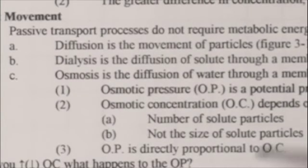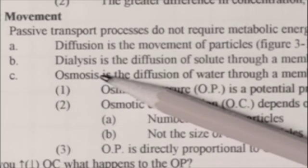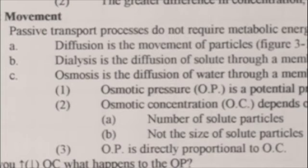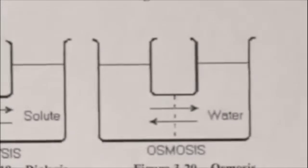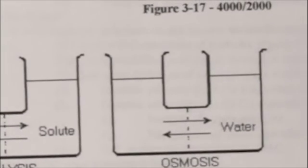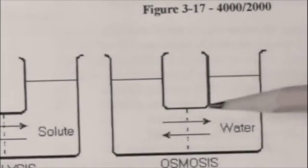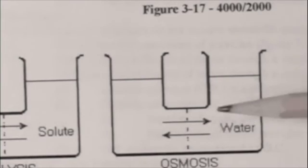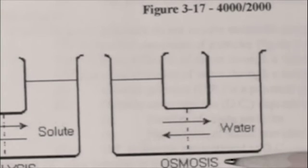Osmosis — the third important example. Let's keep it simple: osmosis is the diffusion of water through a membrane. Let's once again look at the U-shaped container. In this case, water is allowed to cross from one side to the other. What do we call the diffusion of water through a membrane? Osmosis.